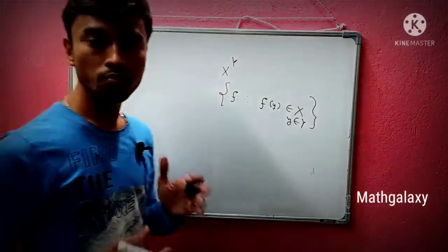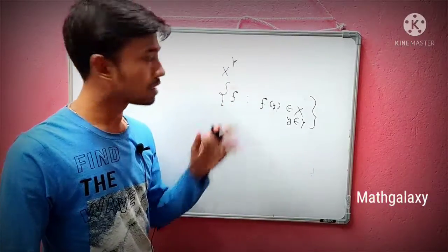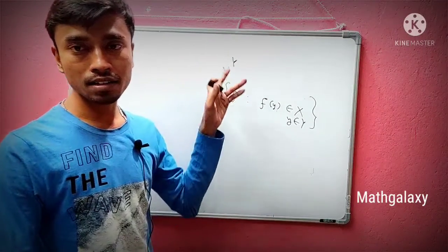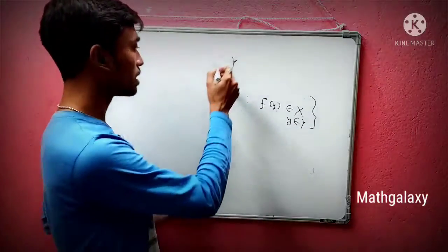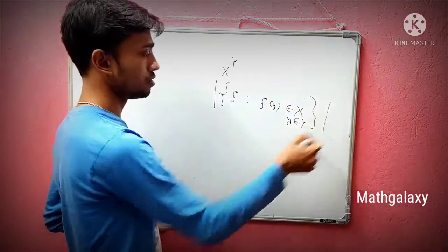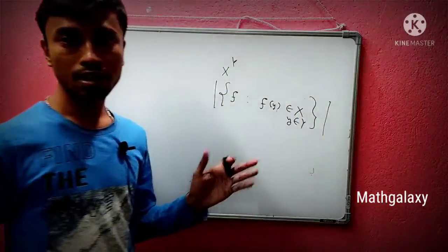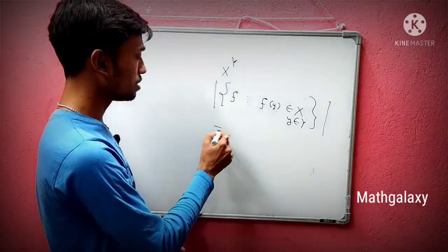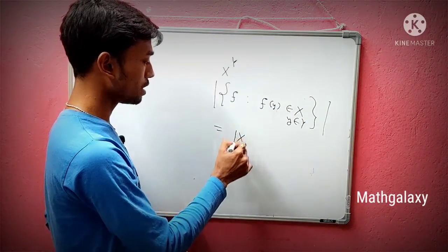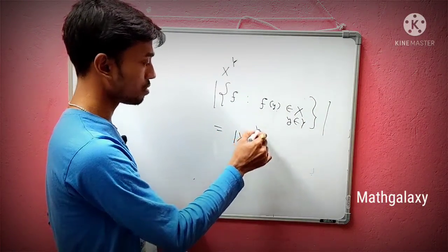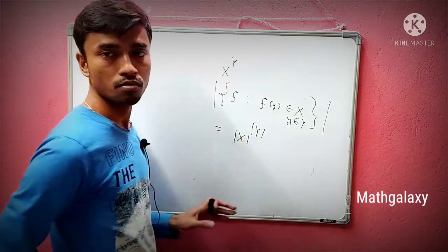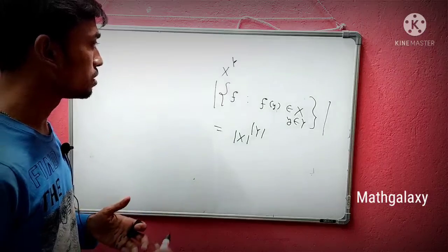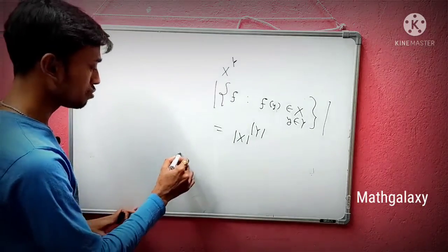The beautiful formula about this setup is: what is the cardinality of this set? The cardinality means how many points are there in this set, and that is defined by the cardinality of X to the power of the cardinality of Y.